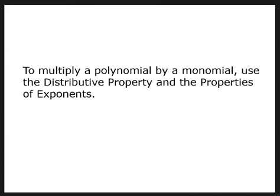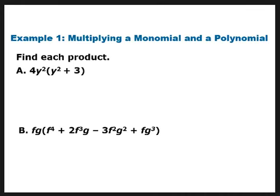Basically what you want to think about here is multiplying a polynomial by a monomial — we're just going to distribute. We talked about a specific type of multiplication of polynomials when we talked about foiling, but foiling is just a term reserved for a situation where you have a binomial times a binomial. So I'm going to take this 4y² times everything inside and distribute it. 4y² times y² gives me 4y⁴ plus 12y².